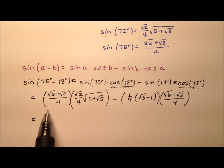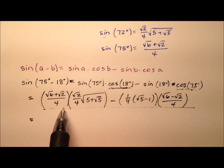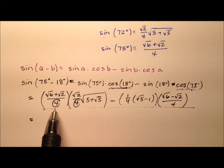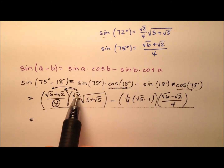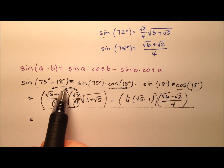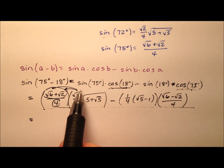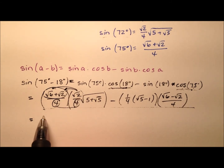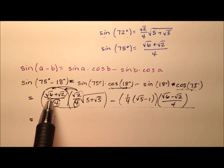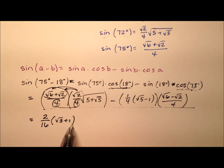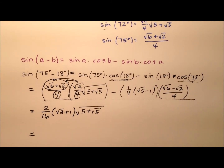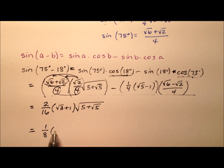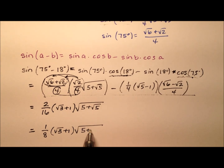Now we clean this up a bit. I have four times four in the denominator, which makes 16. I could distribute the square root of two through both terms, or factor out a square root of two and multiply it with the other square root of two, giving me a two over 16. Factoring out the square root of two leaves the square root of three plus one, and multiplying through, this first piece simplifies to roughly the form we'll leave it in.